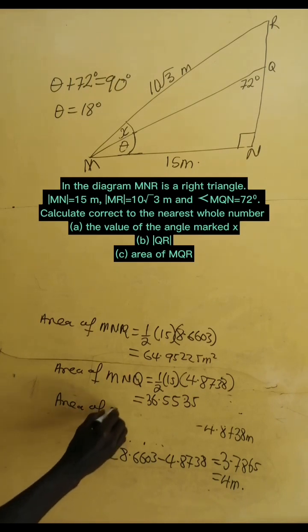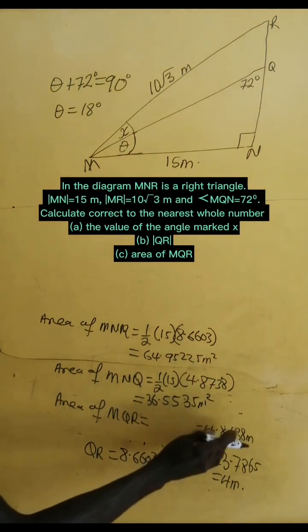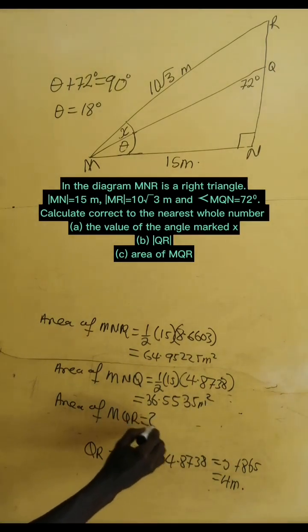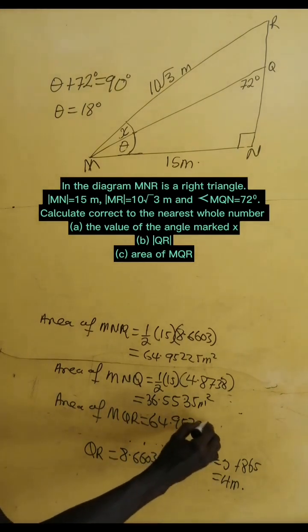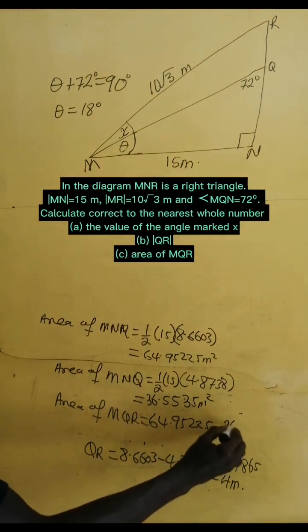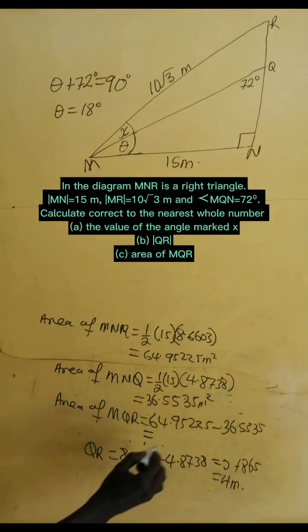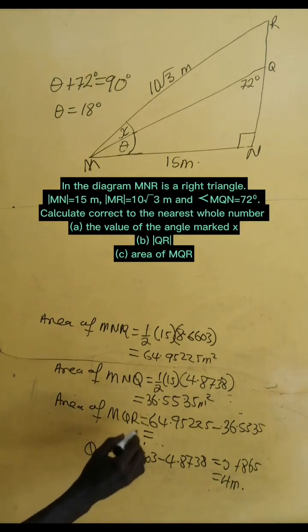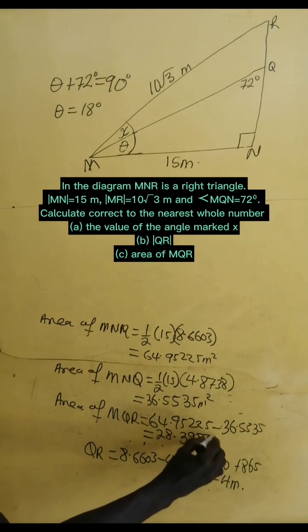So, if we need the area of MQR, we subtract the area of MNQ from the area of MNR. Now, that is very simple. This simply gives us 28.3975, which can be simply written as 28 meters squared to the nearest whole number.